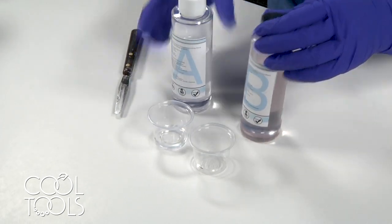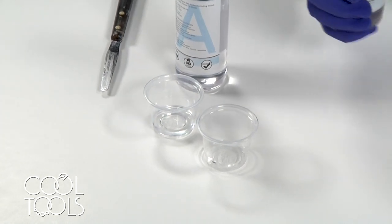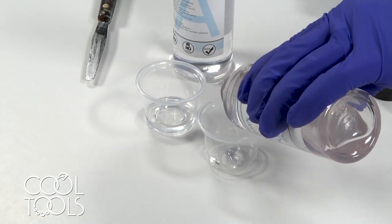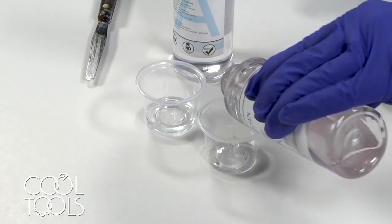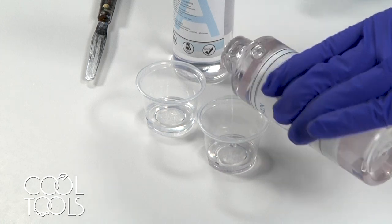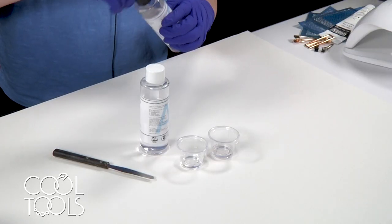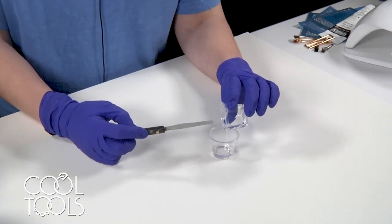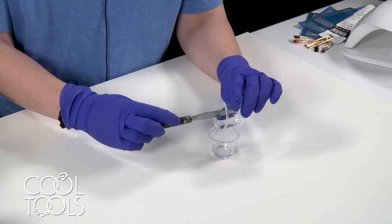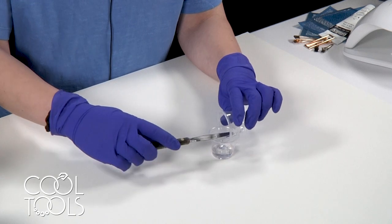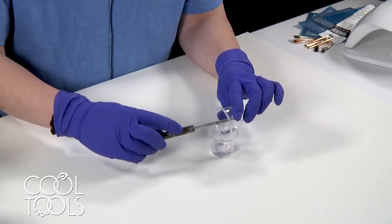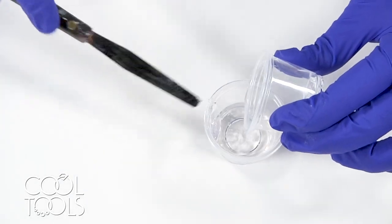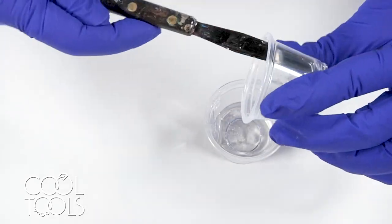This resin has a 30-minute work time and a 24-hour cure time so that is plenty of time for us to add a pigment and get these casted. So again equal parts here and then I'm going to combine them together into one cup and mix them until they are evenly incorporated and then I just like to go back and forth between the cups a couple of times to make sure I'm getting the sides and the bottoms incorporated as well. But we're starting off by putting as much resin as I can from one cup into the other.